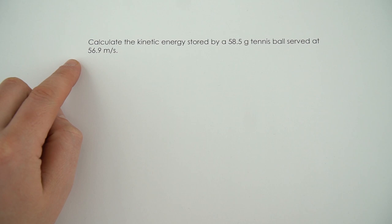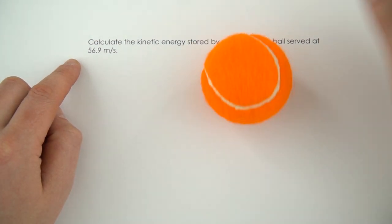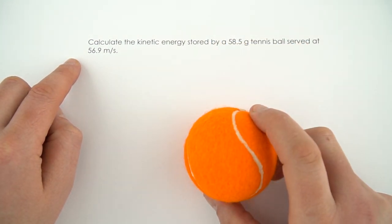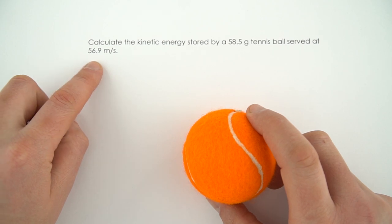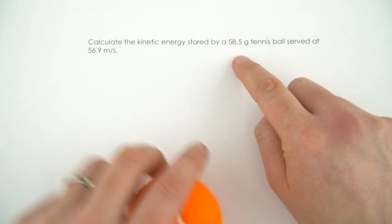So here we need to calculate the kinetic energy stored in a 58.5 gram tennis ball served at 56.9 meters per second. So that's the mass of an average tennis ball.